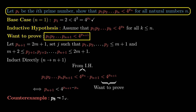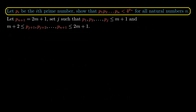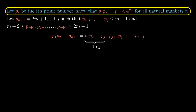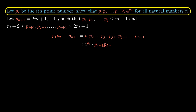Back to our solution: we split the product of prime numbers from p_1 to p_{n+1} into two parts. The first part is from p_1 to p_j, and the second part is from p_{j+1} to p_{n+1}. We use the inductive hypothesis to bound the first part, which is less than 4 to the power of p_j. We now focus on the second part — and this is where it gets beautiful.